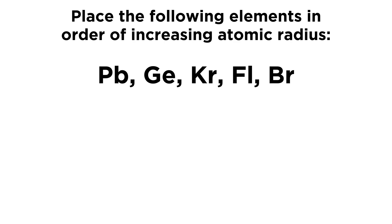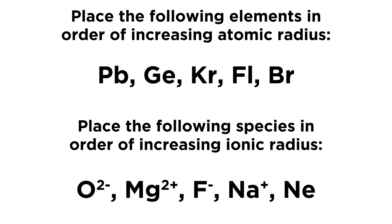The first question says: place the following elements in order of increasing atomic radius. So we have lead, germanium, krypton, flerovium, and bromine. The second question says: place the following species in order of increasing ionic radius. So we have O2-, Mg2+, F-, Na+, and neon, a neutral neon atom.